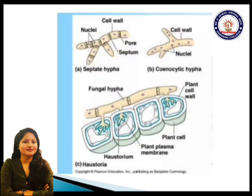In Figure A, we can see septate hyphae where many cells are demarcated by a cross-border known as the septum. Each cell has its own nucleus and cytoplasm. In Figure B, there is no presence of septa, and there are numerous nuclei sharing a single pool of cytoplasm — this is aseptate hyphae. Septate hyphae is a characteristic of higher groups of fungi such as ascomycetes and deuteromycetes, while aseptate hyphae is characteristic of lower groups such as phycomycetes and zygomycetes.